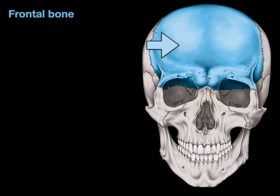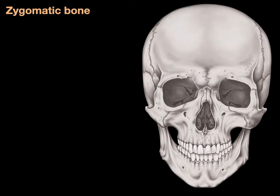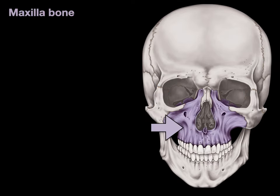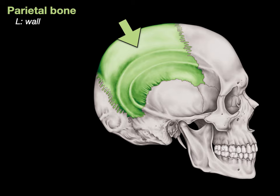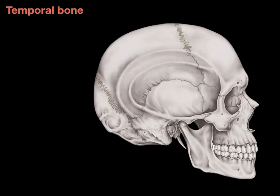Here's the frontal bone — frontal is Latin for forehead, and it's the bone of your forehead. The zygomatic bone is your cheekbone, and the maxilla bone is here — maxilla is Latin for jaw, it's your upper jaw. The parietal bone in the lateral view of the skull is shown in lime green, and parietal is Latin for wall. Whenever you see the word parietal — like parietal pleura, parietal pericardium, parietal peritoneum, or parietal bone — it's forming the wall of something.